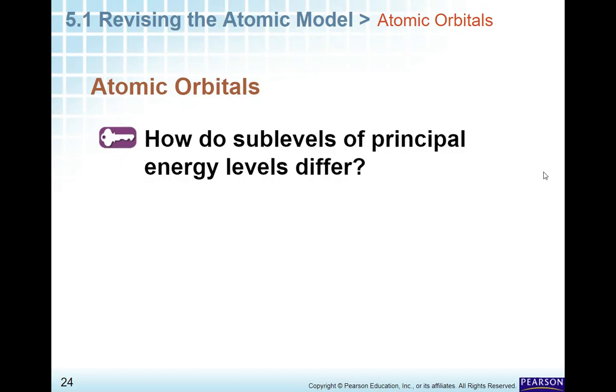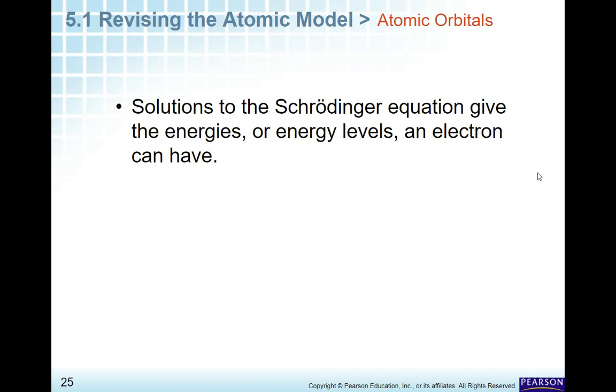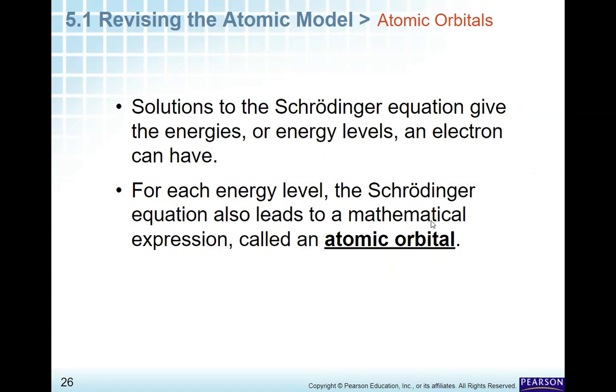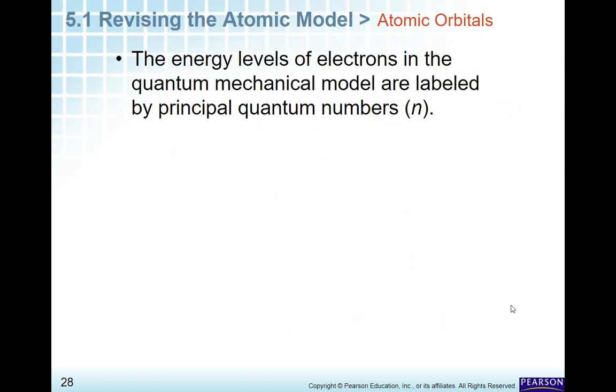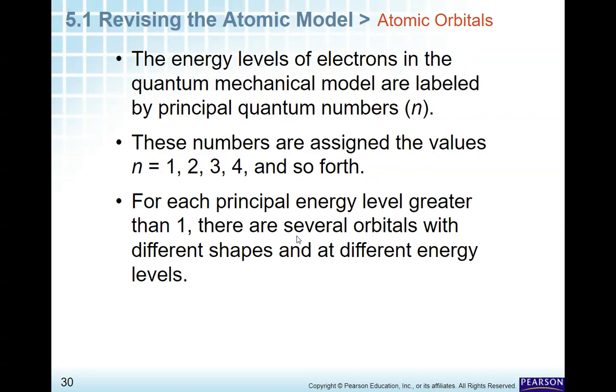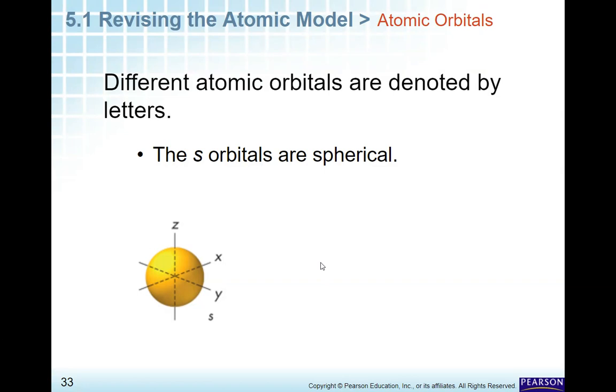So, atomic orbitals. How do suborbitals of a principal energy level differ? So, solutions to Schrodinger's equation gives the energies or energy levels that an electron has. And so, we call this mathematical expression is called the atomic orbital. An atomic orbital is represented by a picture as a region of space, which is high probability of finding that electron. And, we call that the electron cloud. We're not going to worry about quantum numbers at this point. I think that we have better served. So, we're going to bypass the quantum numbers.